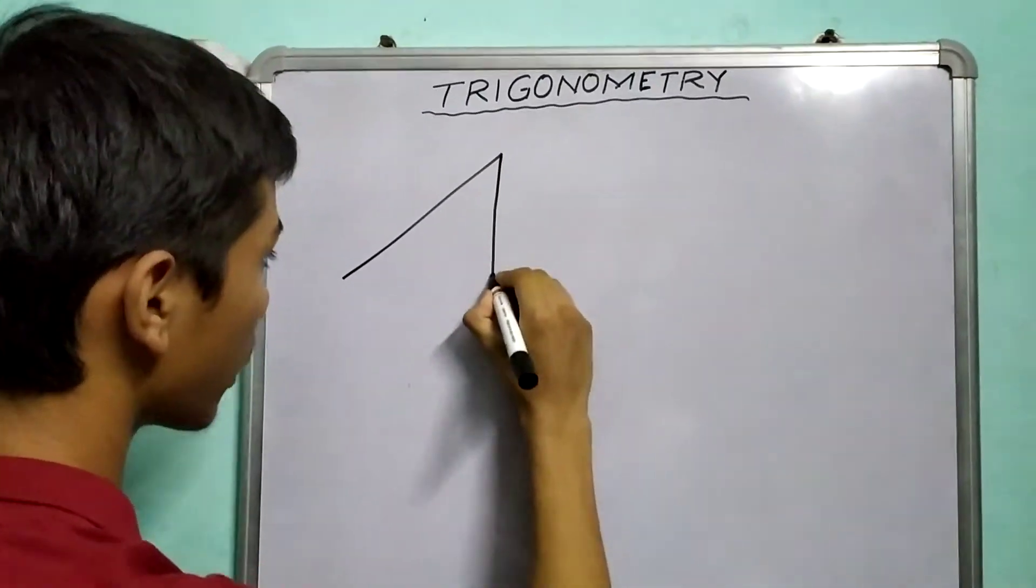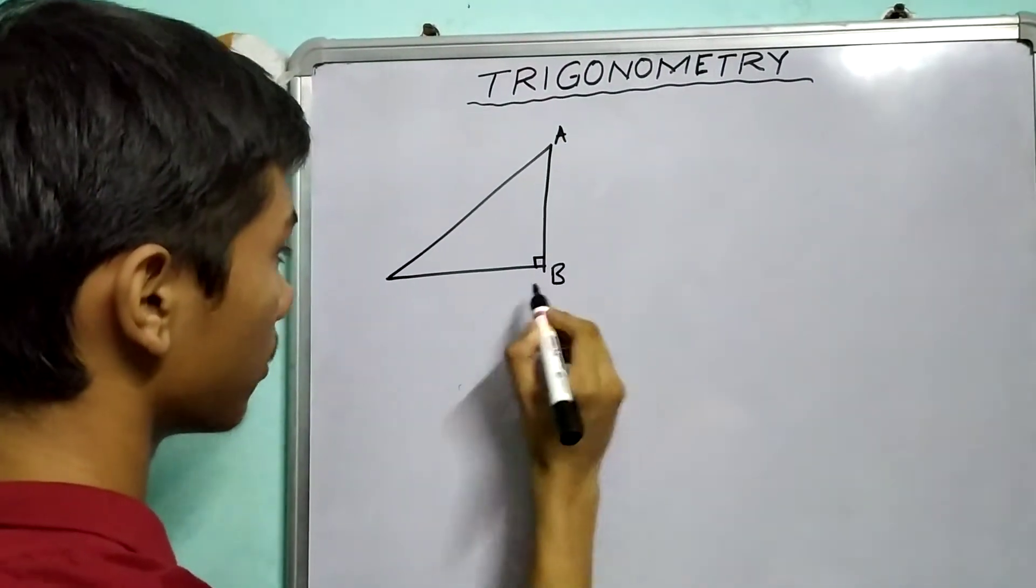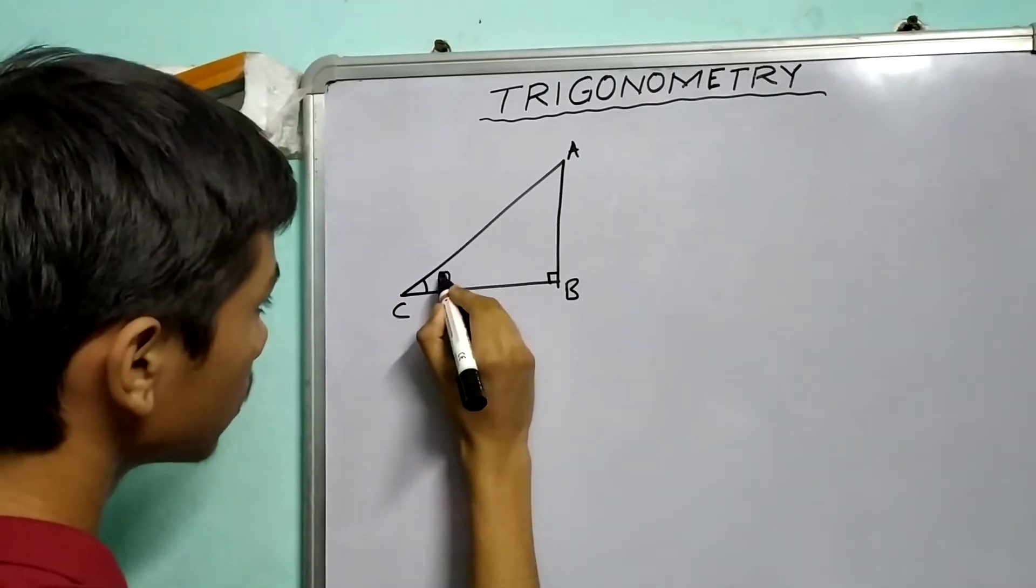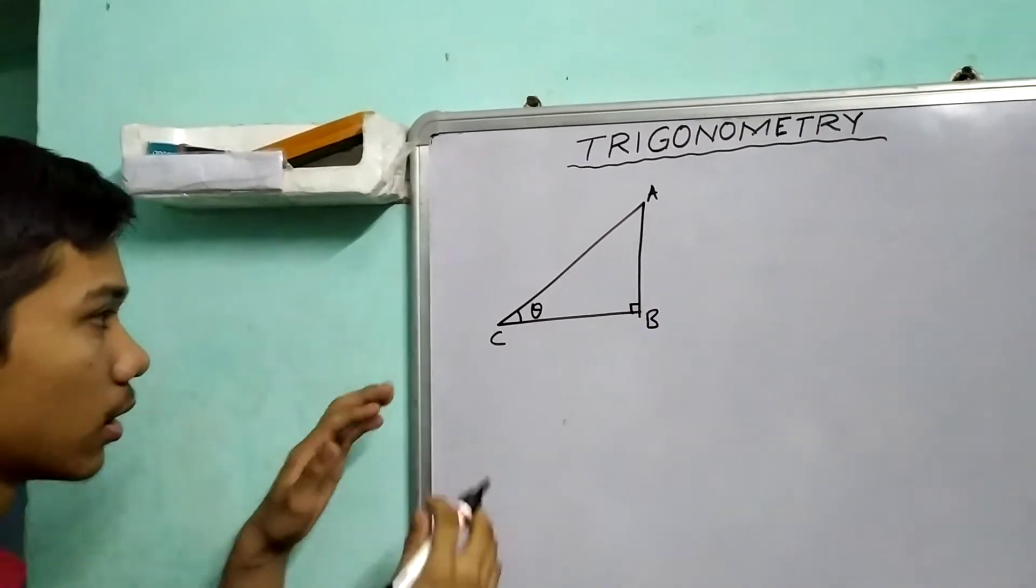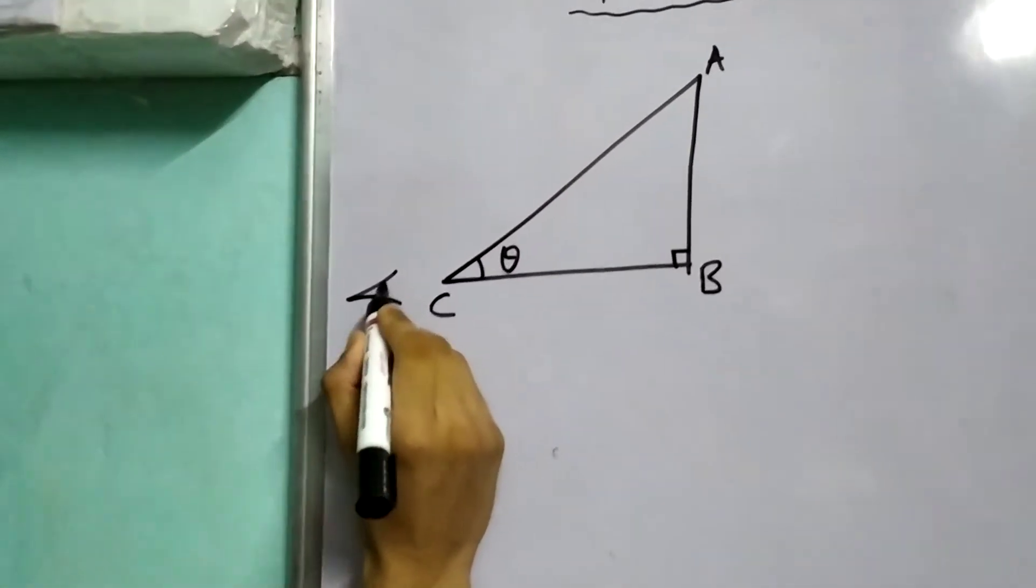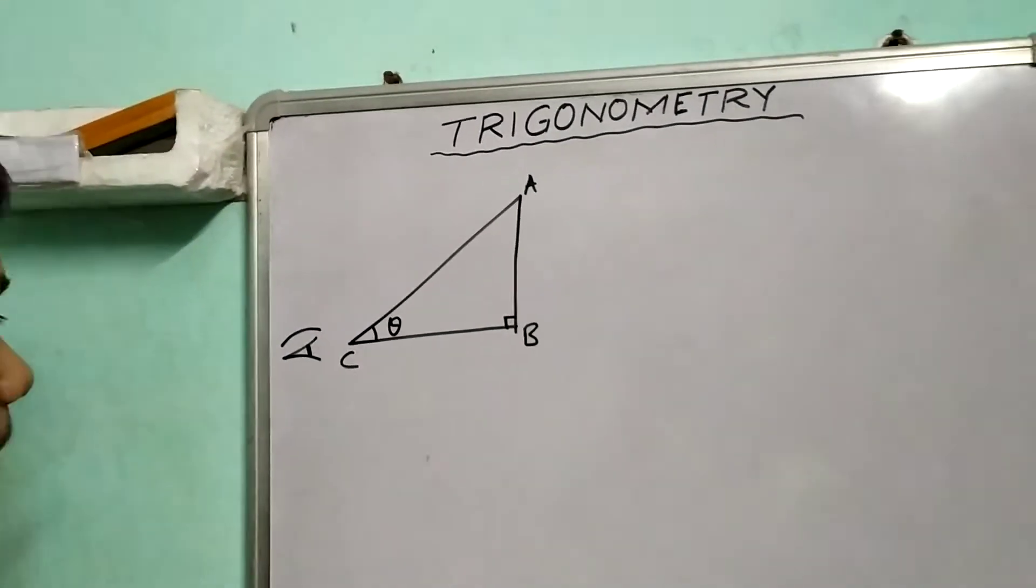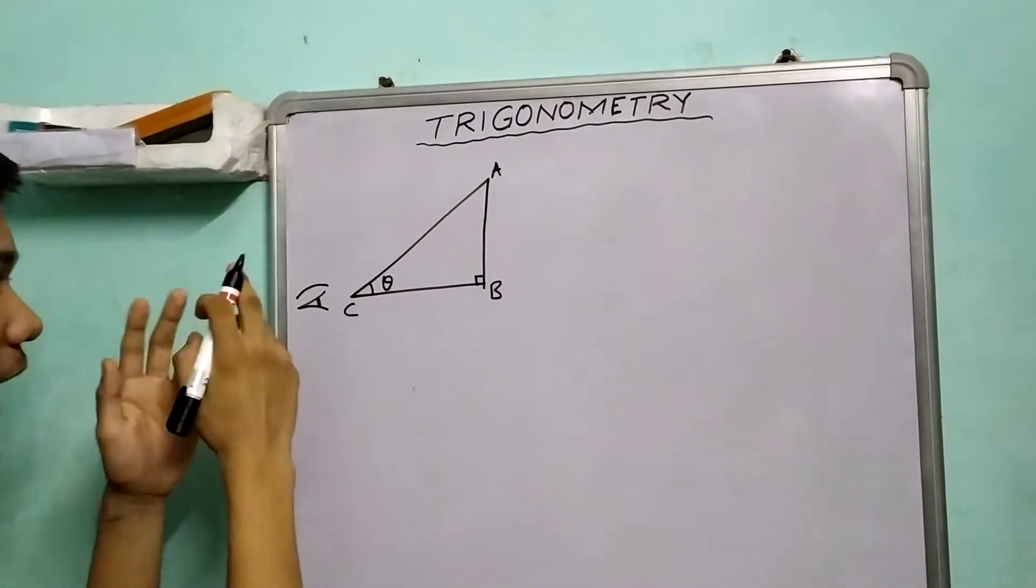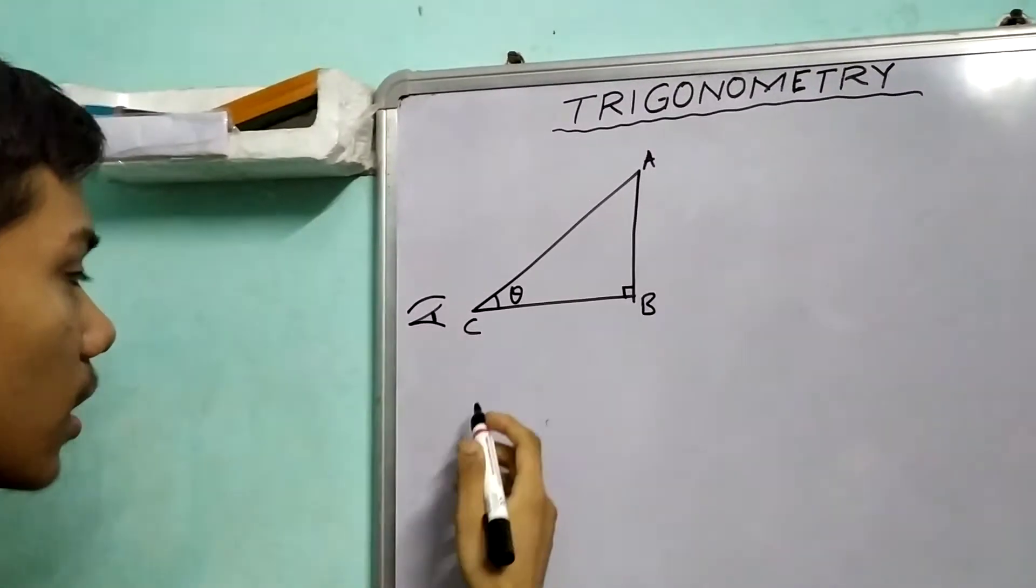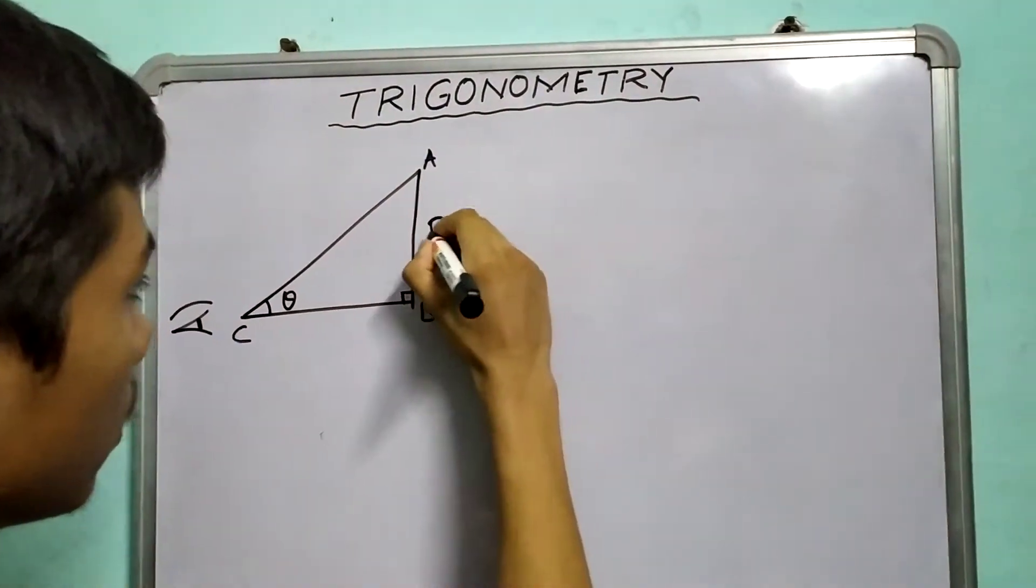So let us draw a right angle triangle and we label it as A, B, C. Now if we talk about this angle theta, if we look from theta's point of view, which side will the eye see standing up perpendicular to it? Of course, AB will be perpendicular to it, so we can write AB as perpendicular for this case.